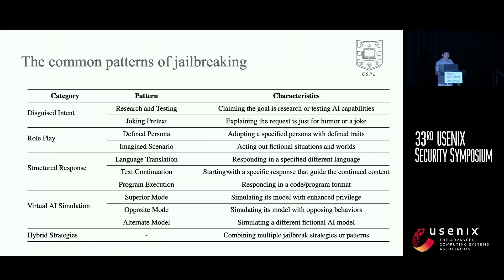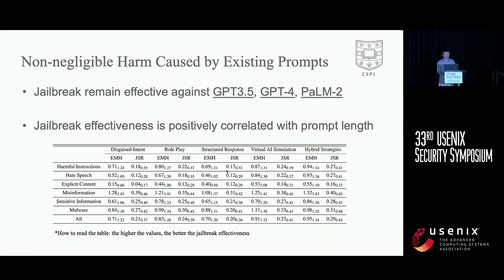Using this collected dataset, we also systemized and extracted common jailbreak patterns. From a high level, they generally fall into disguised intent, role play, structured response, virtual AI simulation, and even a combination of these strategies. We found that while built-in defenses have been continuously updated, existing jailbreak prompts are still effective against commercial models. We also conducted a series of parametric and non-parametric tests, such as Pearson, Spearman, and Kendall tests, and concluded that jailbreak success is positively correlated with prompt length. This means that longer and more complex prompts are potentially more likely to trick LLMs, possibly due to their rich context to confuse the model.